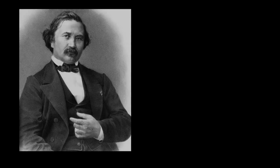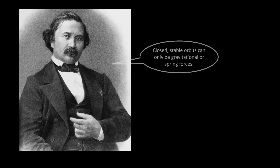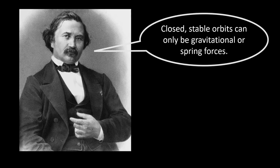A famous result in orbital mechanics known as Bertrand's theorem states that if you have a central force that is a pure function of radial distance — any function of radius — there are only two functions that will form stable, closed orbits. As it happens, both of the functions are power laws, a pure power of the radius, and both of the orbits are ellipses.